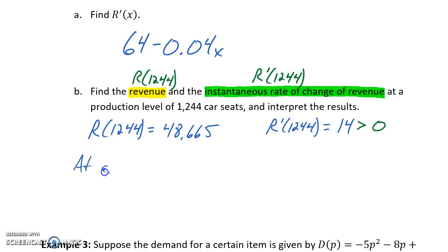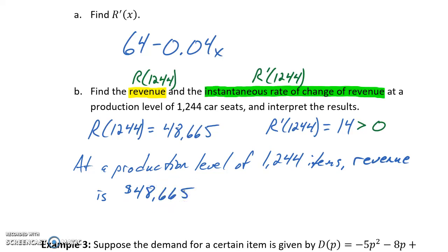So to interpret this, we could say that at a production level of 1,244 items, our total revenue is currently $48,665 and is increasing.